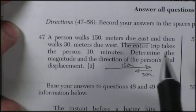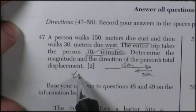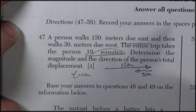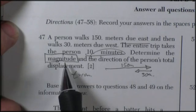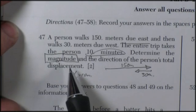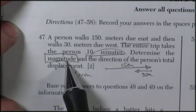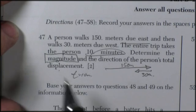So the question is, the entire trip takes 10 minutes, so time is 10 minutes. Determine the magnitude. Now magnitude is a word that means size. Keep in mind, a vector has to have a size and a direction. So oftentimes they'll ask for magnitude only. In this case, they're asking for magnitude and direction of the total displacement.